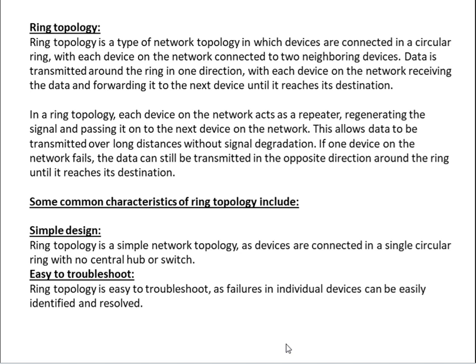If one device on the network fails, the data can still be transmitted in the opposite direction around the ring until it reaches its destination. Some common characteristics of ring topology include the following.